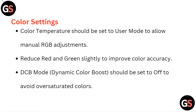Color settings. Color temperature should be set to user mode to allow manual RGB adjustments. Reduce green and red slightly to improve color accuracy. DCB mode — dynamic color boost — should be set to off to avoid oversaturated colors.